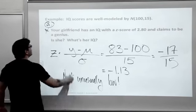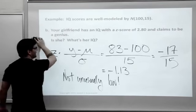If we did the Z-score and it was negative 2 point something, negative 3 point something, then yes, we are getting unusually below average. But in this case, this is not unusually low. It is below average, not that much below average. Now we'll move on to B. Your girlfriend has an IQ with a Z-score of 2.80. She claims to be a genius. What's her IQ?